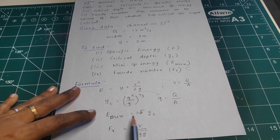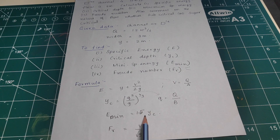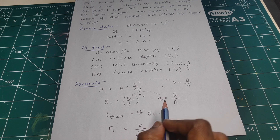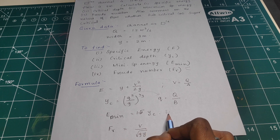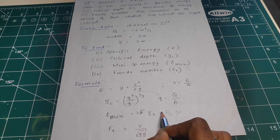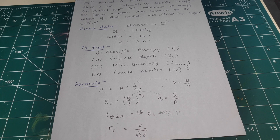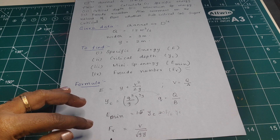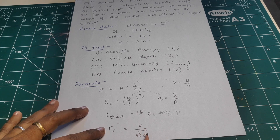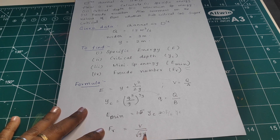E minimum is calculated as 1.5 yc, or equivalently 3 by 2 times yc. Froude number is equal to V divided by root of g times y.